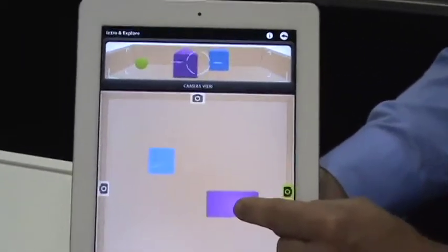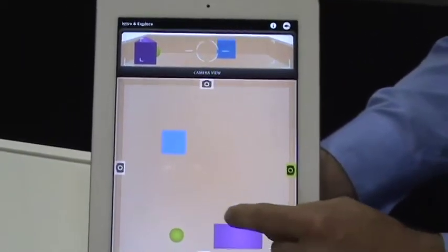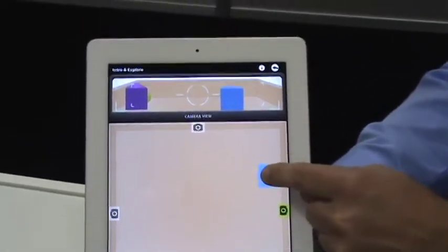So as you move things in the top-down view on the bottom part of the screen, you have the side view, and you can see how things are changing.